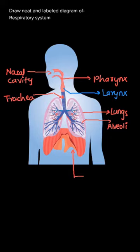The trachea enters inside the lung and divides into bronchi and bronchioles, which further lead to alveoli.